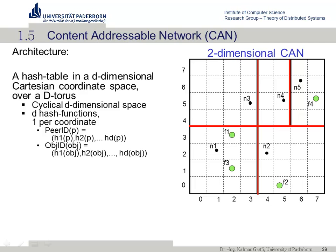One of the very typical peer-to-peer overlays, also prominent in research, is the Content Addressable Network, called CAN. It was published in 2001 like Chord and was one of the first structured DHTs. What makes it different from Chord is that Chord had a single-dimensional ring, whereas CAN introduces several dimensions. You can think of a D-dimensional torus, meaning the sides overlap — if you exceed the right side, you re-enter on the left.